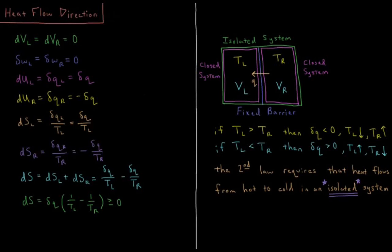This video will discuss the direction of heat flow in isolated systems as predicted by the second law of thermodynamics. We have a green boundary here representing our total isolated system, where no energy or matter may be exchanged outside of this green box.